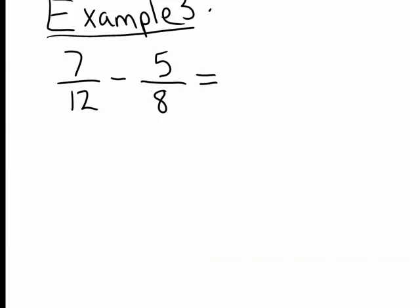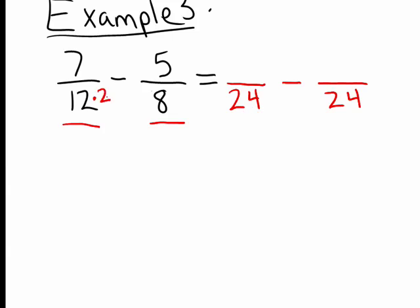Example 3: I'm going to subtract the fraction 7/12 minus 5/8. I need to get a common denominator, so I want to rewrite both fractions to have a common denominator. I ask myself: what is the smallest number that both 8 and 12 multiply into? I'm going to go with 24. What did I do to 12 to make it into 24? I multiplied by 2, so I have to do the same to the numerator: 7 times 2 became 14, and 12 times 2 became 24.